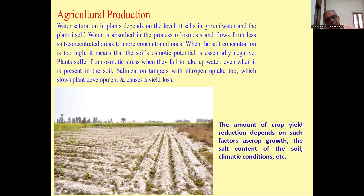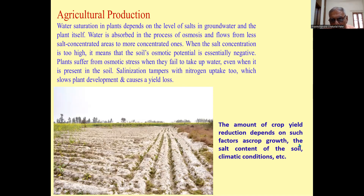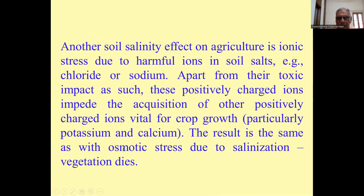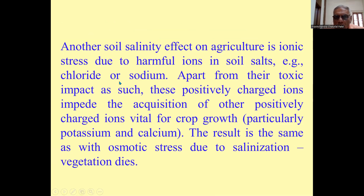In saline soil, due to osmotic stress, the plant will not take up water although it is present in the soil. Salinization also interferes with nitrogen uptake, which slows plant development and causes yield loss. Nitrogen cannot be taken up by plants, resulting in slow growth and low crop production. The amount of yield reduction depends on factors such as crop type, salt content of the soil, and climatic conditions.